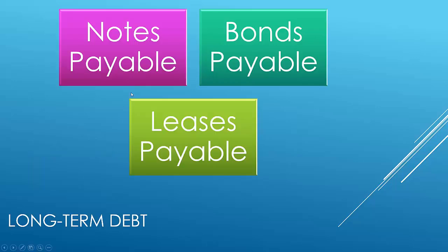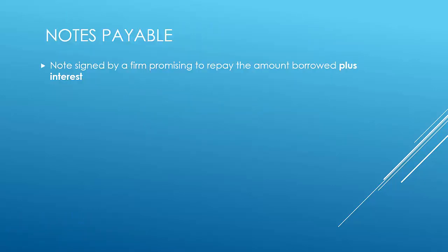There are different kinds of long-term debt: notes payable, bonds payable, and leases. These are different ways to do capital structuring within a company — meaning where does the company finance itself, where does it get its money from? We usually have to take out chunks of money in order to expand or improve operations, do research and development, and so on. These are different ways the company can expand into the future.